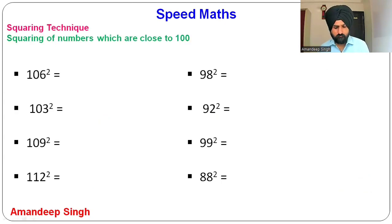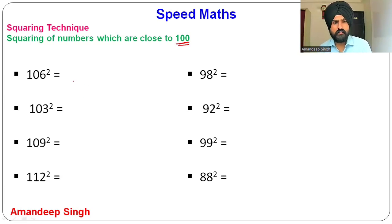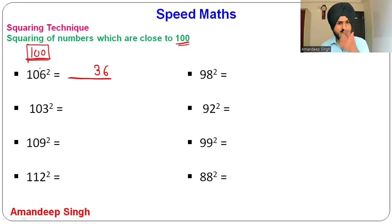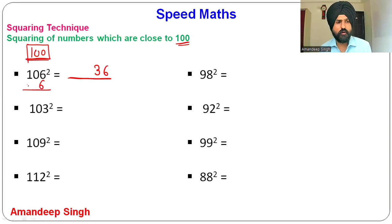Now let's find squares of numbers close to 100. For 106²: the base is 100. This number is 6 more than 100. 6² = 36, write 36. There is no need to use 25 this time — whatever is extra, add it to the number itself. 106 + 6 = 112. So 106² = 11236.